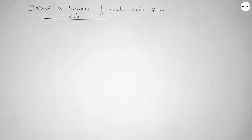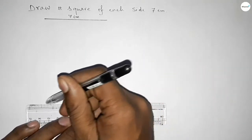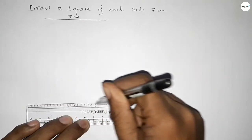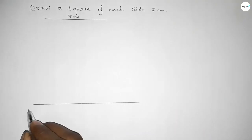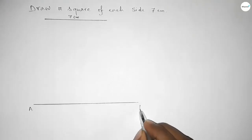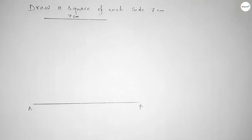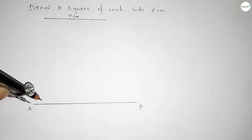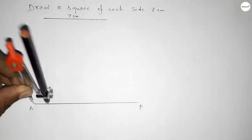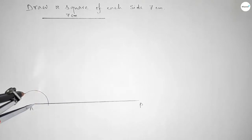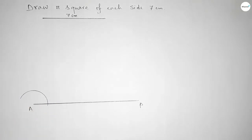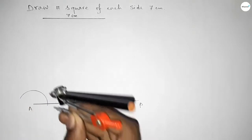Now drawing here a line of any length. Next, taking a point — this is point A. Now we have to draw a 90-degree angle on the point A. By compass, taking any length and drawing an arc.